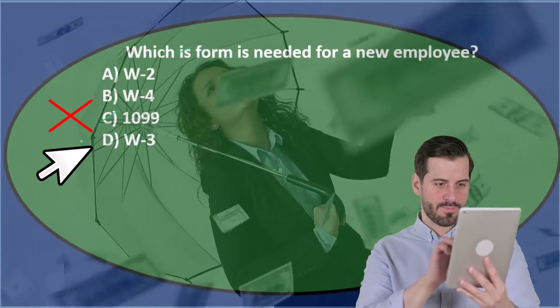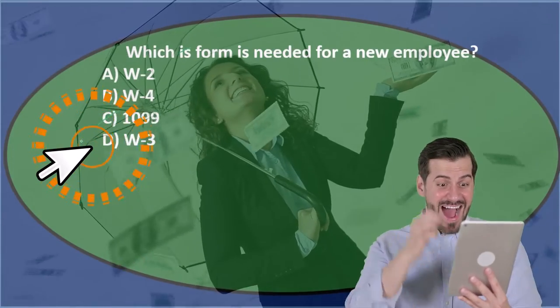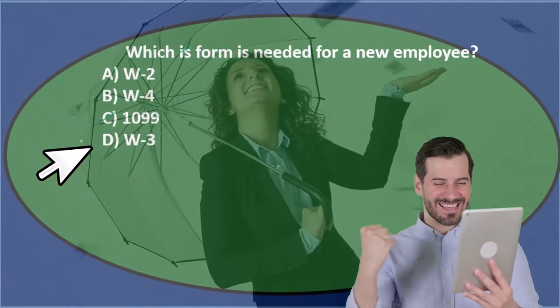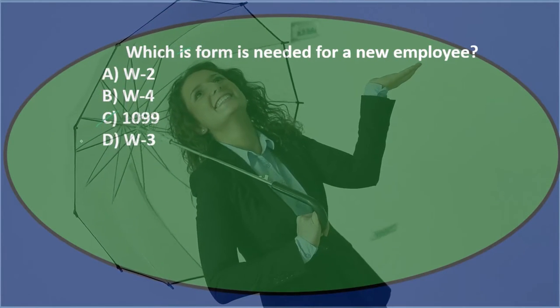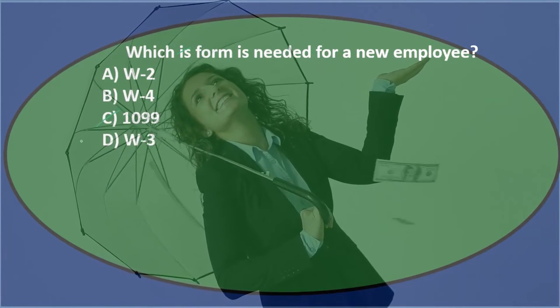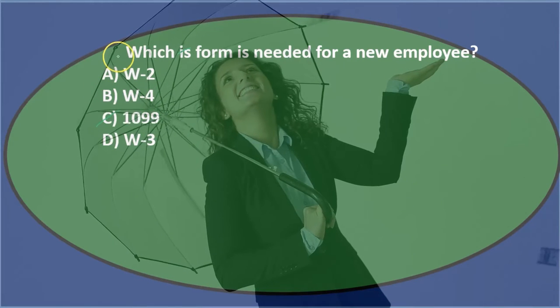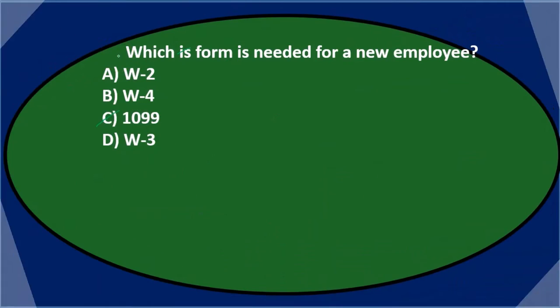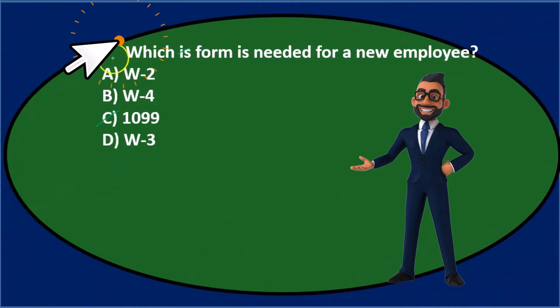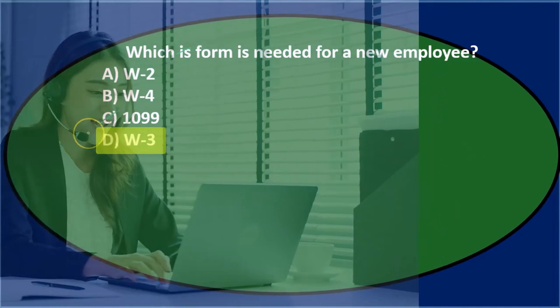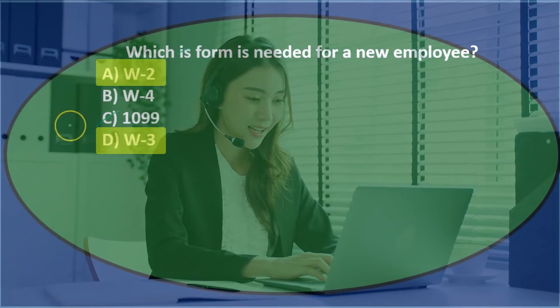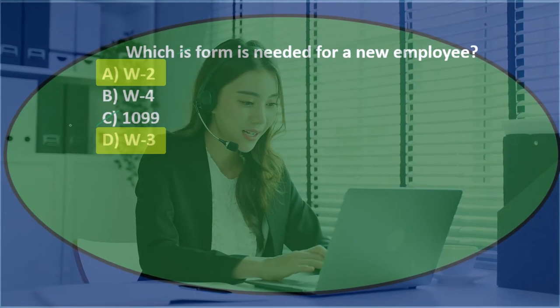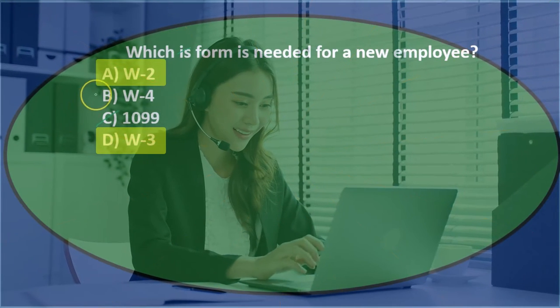And then D says the W-3, which again we may not know what a W-3 is, but it sounds similar to the W-2s and whatnot. So if we go through this we got the W-2, W-4, W-3. So let's read through it again: which form is needed for a new employee? And we could say, you know, the W-2 and the W-3 are related. So we might say the W-3 is summing up the W-2s and they're at the end of the year. And the best answer is the W-4.